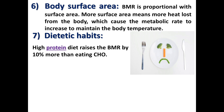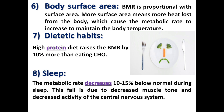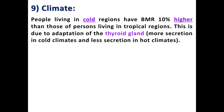High protein diet raises BMR by 10% more than eating carbohydrate. Sleep: metabolic rate decreases 10 to 15% below normal during sleep, due to decreased muscle tone and decreased activity of the central nervous system. Climate: people living in cold regions have BMR 10% higher than those living in tropical regions, due to adaptation of the thyroid gland by secreting more thyroxine hormone in cold climate and less in hot climate. Thyroxine stimulates metabolic rate and thus increases BMR.